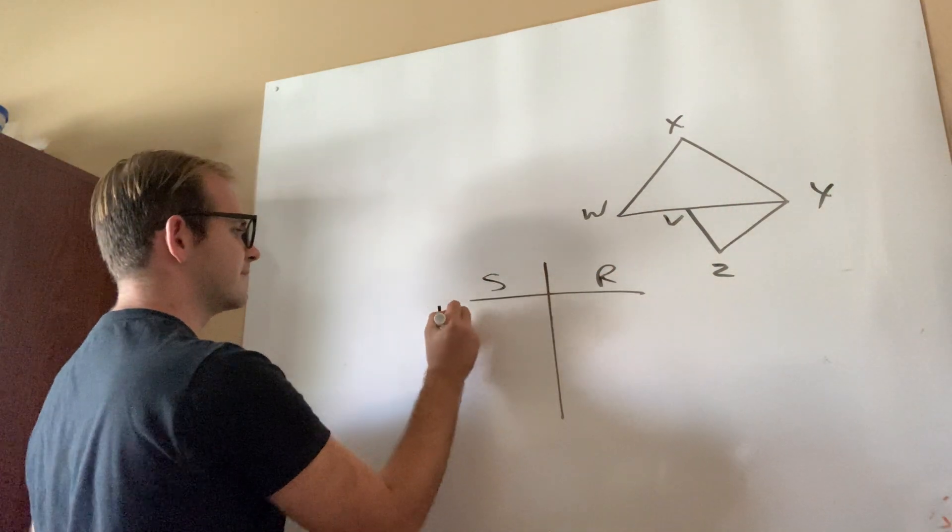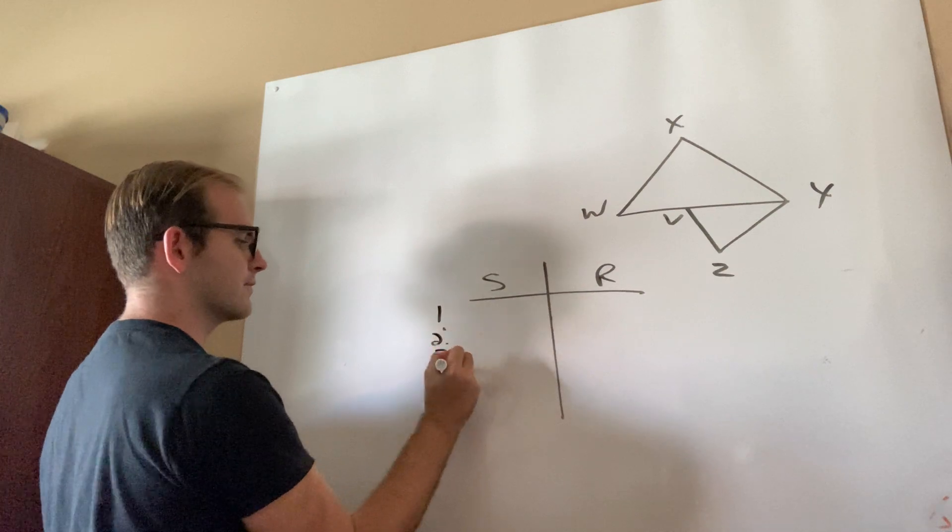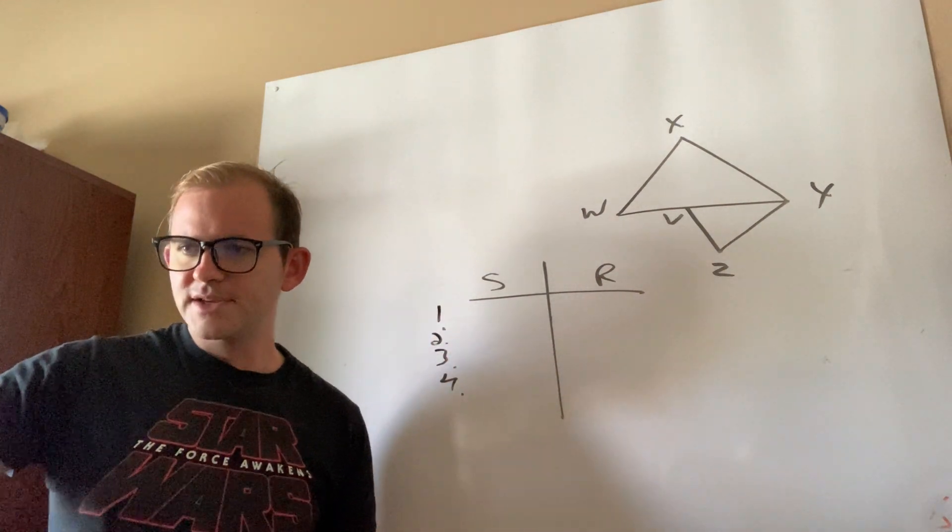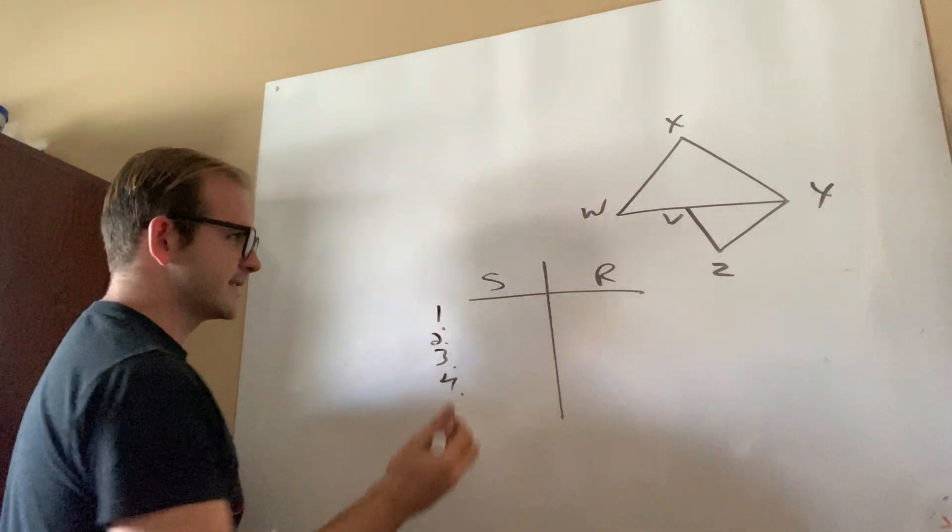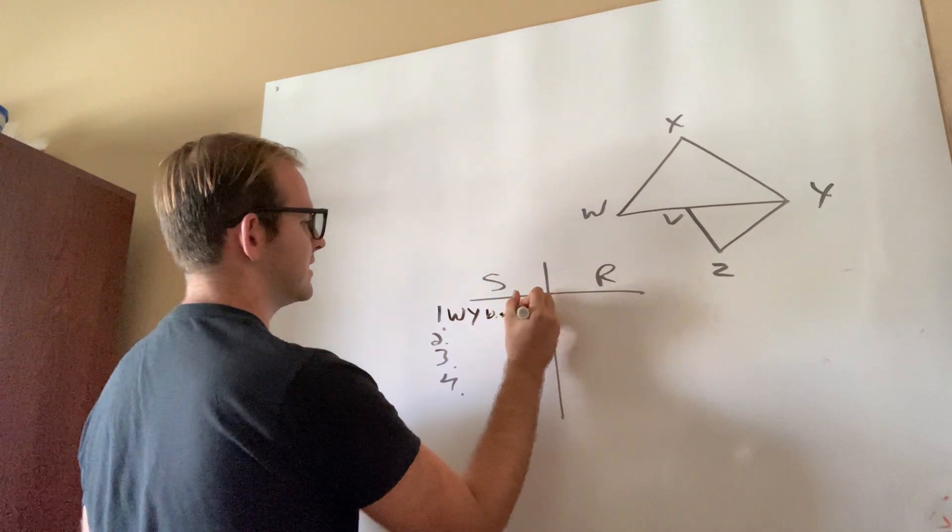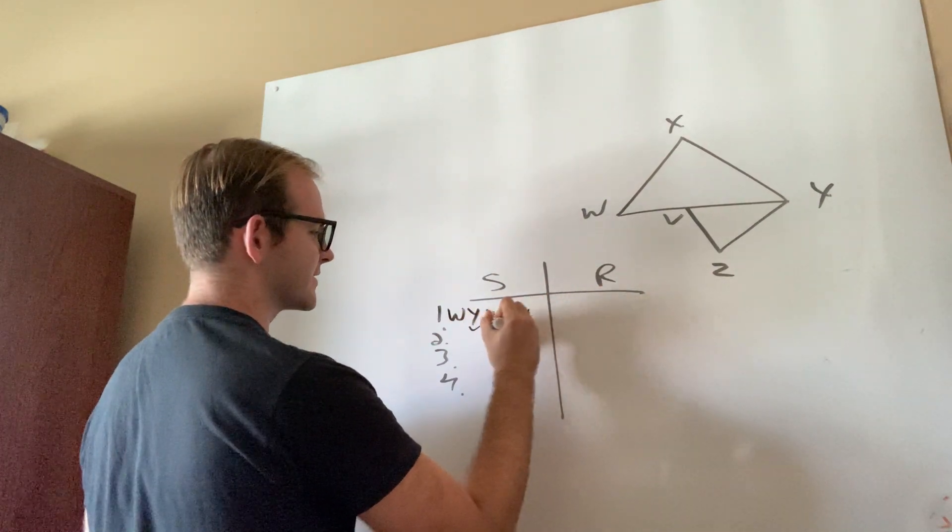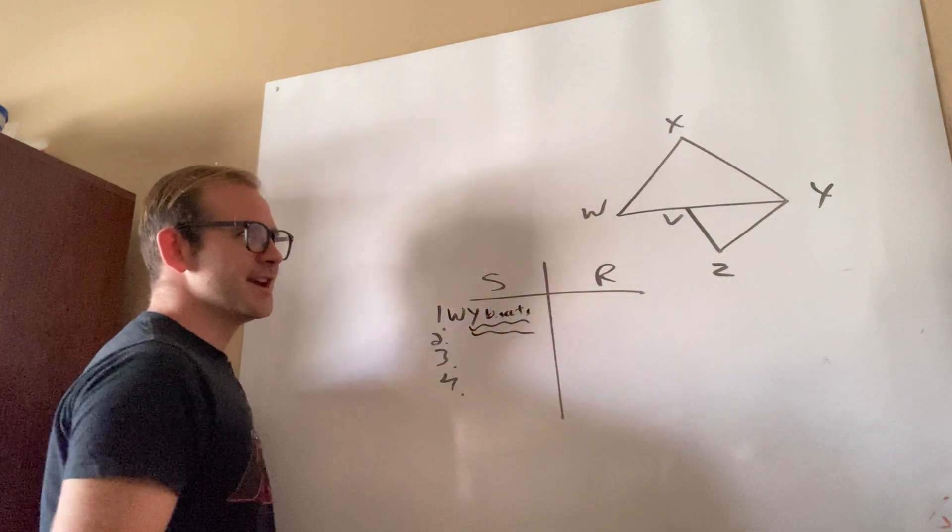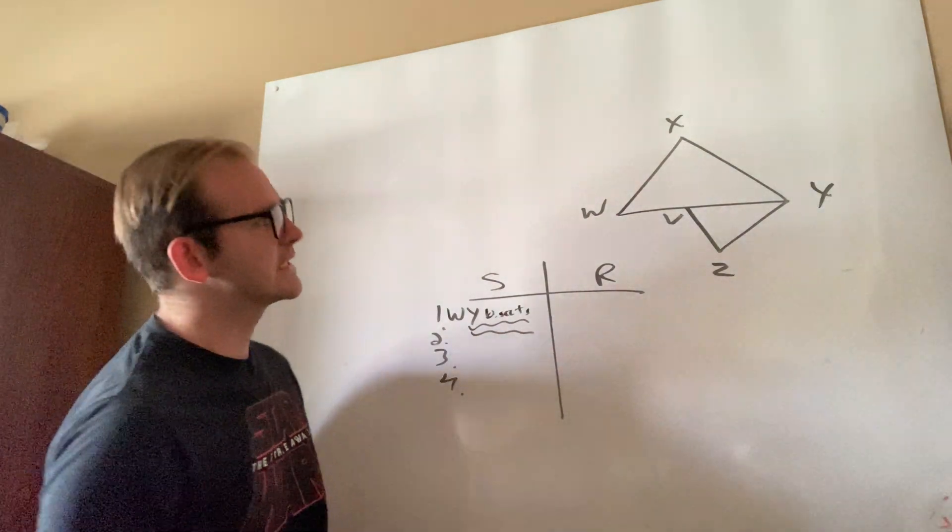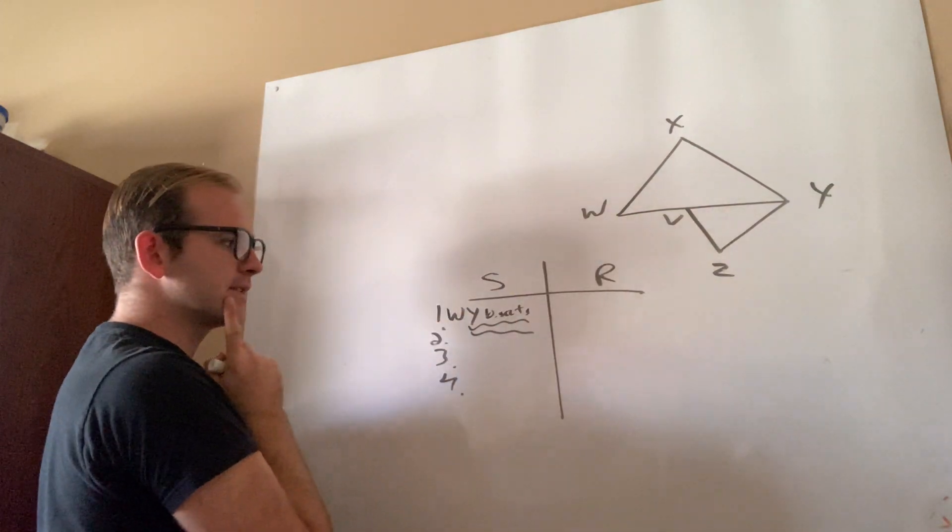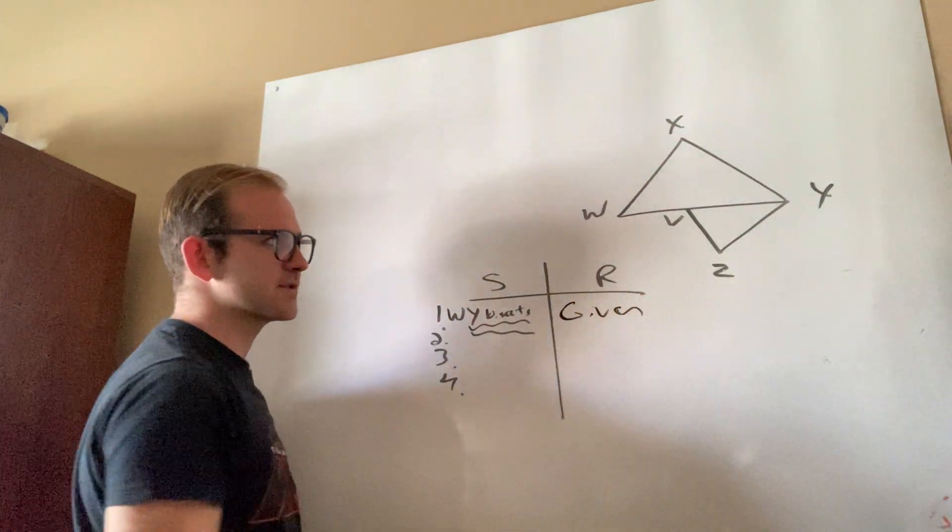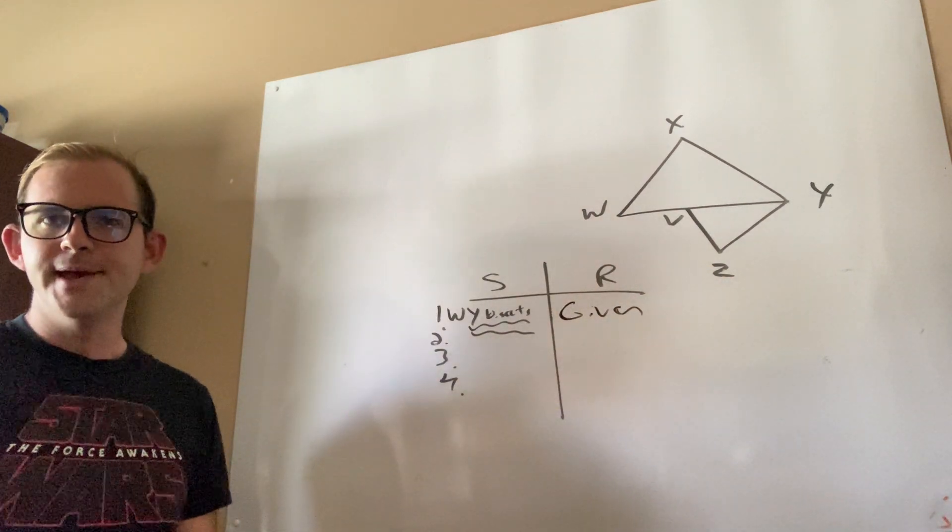This one, once again, has four lines. One, two, three, four. All right. So first things first. They tell me that WY bisects this big angle over here. Well, I know it's given to me, so I'm going to fill that in first, right? They actually told me that in the problem.